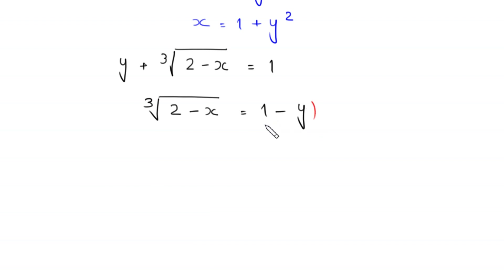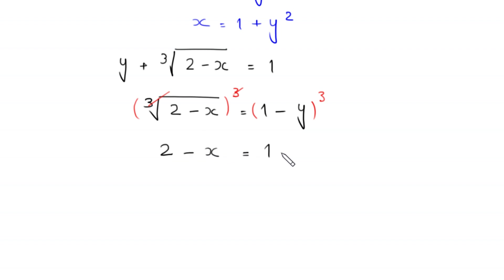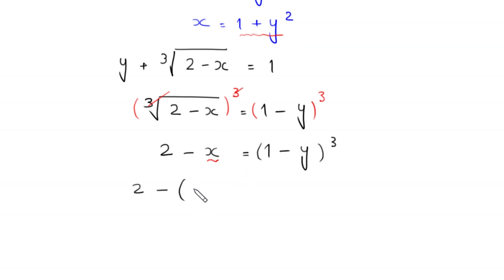We take the cube of both sides of this equation. The cube cancels with the cube root on the left hand side, leaving 2 minus x is equal to 1 minus y whole cubed. We then replace x with its value 1 plus y squared, so this equation becomes 2 minus (1 plus y squared) is equal to 1 minus y whole cubed.